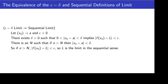So we found for any epsilon and any sequence converging to A, an N such that f of x sub n minus L is less than epsilon. That's the definition of f of x sub n converging to L. So any sequence converging to A has f of that sequence converging to L, and that is the definition of sequential limit. So we've just proved that the epsilon-delta limit implies the sequential limit.